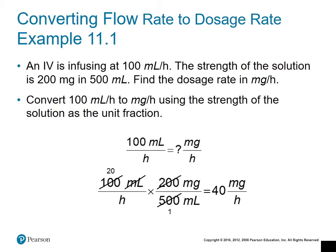For our first example, we are converting flow rate to dosage rate. The IV is infusing at 100 milliliters per hour — that's the flow rate — and we want to find the dosage rate: how many milligrams are being infused over a period of time. The strength of the solution is 200 milligrams in 500 milliliters.